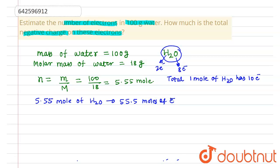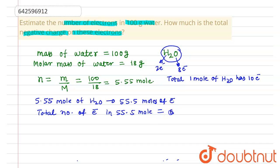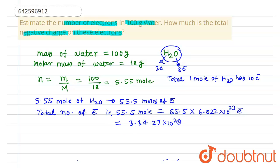Therefore, 5.55 moles of H₂O have 55.5 moles of electrons. In one mole there is one Avogadro number of particles, so the total number of electrons in 55.5 moles equals 55.5 × 6.022 × 10²³, which gives 3.3427 × 10²⁵ electrons.